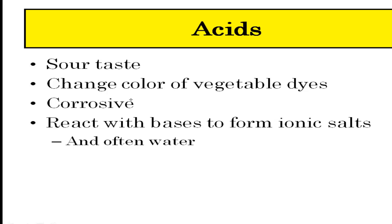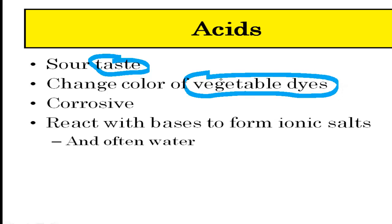First, some general ideas about acids. Acids taste sour — think of lemons and citrus fruits in general, they have that sour taste. Also, depending on the types of vegetables you use, acids — and this is true for bases as well — change the color of vegetable dyes.